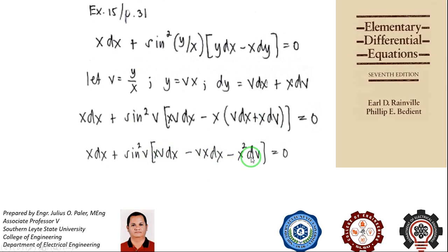But if you look carefully, xvdx minus vxdx will be equal to zero because this is the same. They will cancel out.